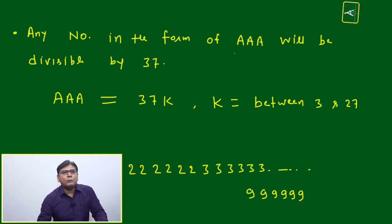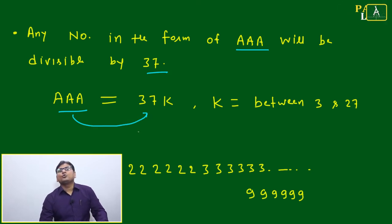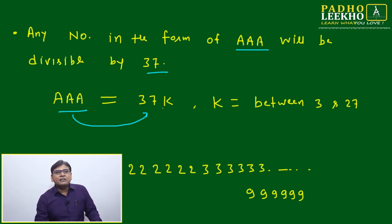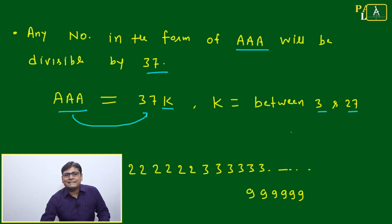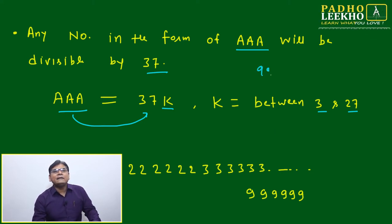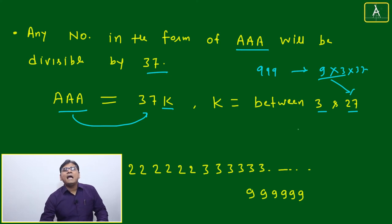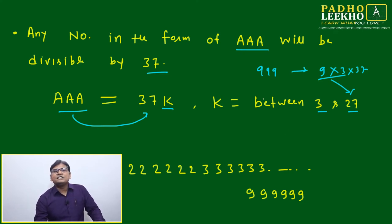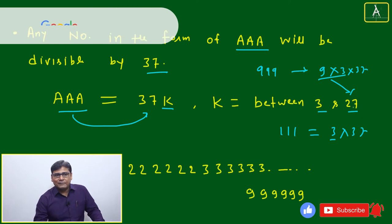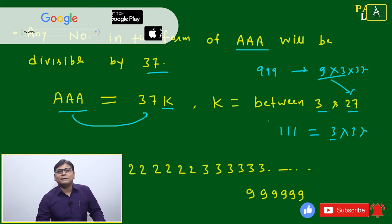Any number in the form of AAA will always be divisible by 37. Algebraically, AAA = 37k. This means if you divide AAA by 37, the remainder will always be 0. Here, the value of K ranges between 3 and 27: the minimum is 3 because 111 = 3 × 37, and the maximum is 27 because 999 = 9 × 3 × 37 = 27 × 37. So K falls between 3 and 27.